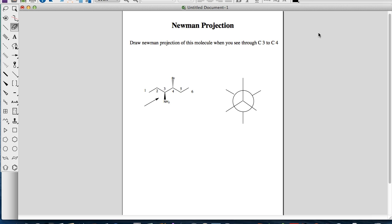A typical question related to Newman projection would be similar to this following example. Draw the Newman projection of this molecule when you see through carbon-3 to carbon-4. As this arrow is pointing to, you will see carbon-3 to carbon-4. And here in this molecule, we have two substituents on this 6-carbon alkane.